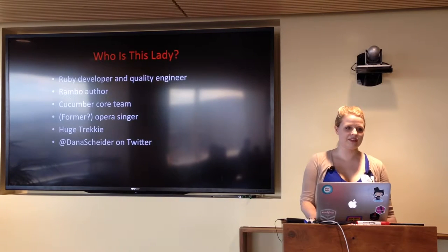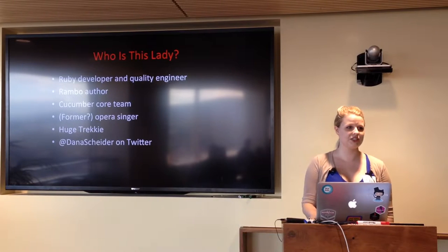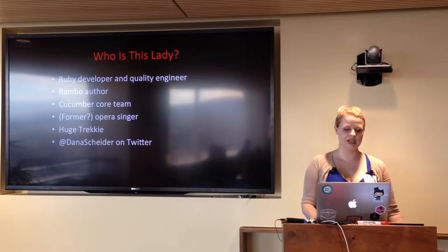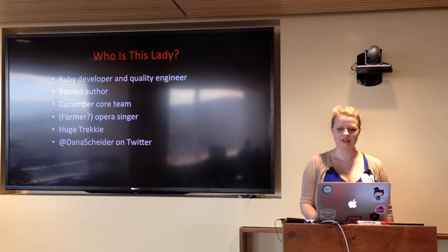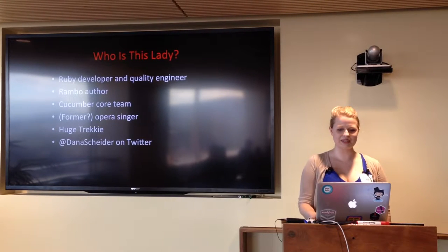A little bit about me. I'm a Ruby developer and a quality engineer. I'm the author of Rambo, which is a collaboration and contract testing tool for Ruby. I'm on the Cucumber core team. You can follow me on Twitter — you'll be exposed to a lot of tweets about my daily frustrations as a developer and as a human being.